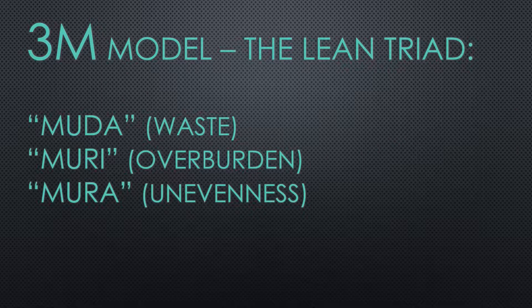Muda comes from the 3M model in lean, also known as the lean triad. This triad consists of three concepts: muda, which means waste; muri, which means overburden; and mura, which means unevenness. Ideally, a lean system should eliminate these three Ms.